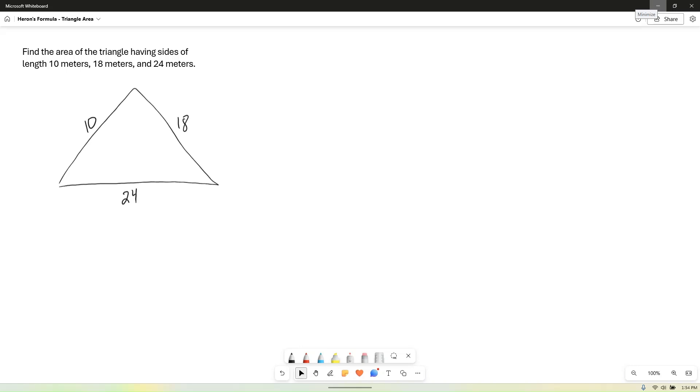And just so we have letters to reference our formulas, I'll put angle A in the bottom left, angle B in the bottom right, and angle C at the top. So that means side A is 18, side B is 10, and side C is 24.